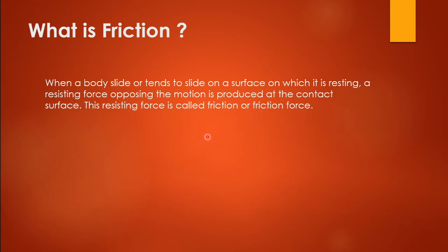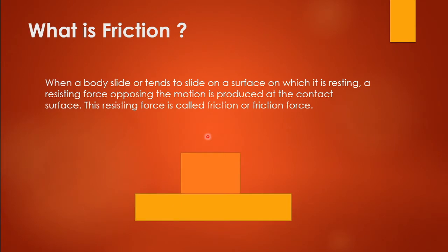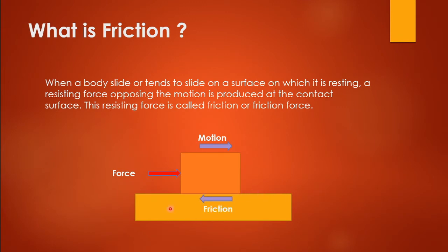Friction resists the motion of a body. Consider a body: we apply force on it and the body starts to move. When the body is in motion, the surface of contact gives an opposing force to the body. This opposing force is known as friction or frictional force.